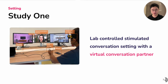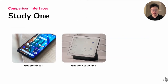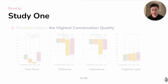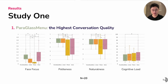To answer the first question, we conducted a comparison study in a lab-controlled simulated conversation setting with a virtual conversation partner. We selected three alternative interfaces: the phone and voice speaker, as they are the most commonly used interfaces for controlling IoT devices in daily life. We also compared Paragraphs Menu with an OHMD linear menu to identify the optimal menu layout for this application scenario. 20 participants were recruited, and results showed that Paragraphs Menu enables the highest conversation quality, supporting the second highest eye contact, the highest politeness, naturalness, and the lowest cognitive load.